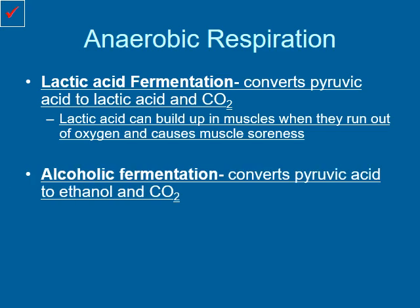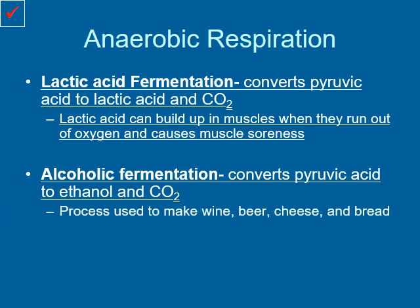The other type is called alcoholic fermentation, and this converts pyruvic acid into ethanol and carbon dioxide, which is used to create alcohol. This process is not carried out by animal cells — it is carried out by plant cells and most forms of bacteria. It probably wouldn't be a good thing if animal cells could go ahead and produce alcohol — that could lead to some pretty awkward situations. This process is used to make wine, beer, cheese, and bread.